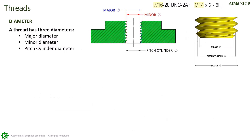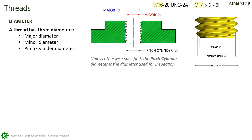A thread has three diameters involved: major, minor, and pitch cylinder. This terminology is applied to both external and internal threads. Unless otherwise specified, the pitch cylinder is the diameter used for inspection according to the ASME standards.